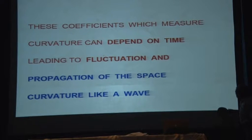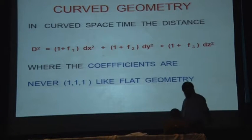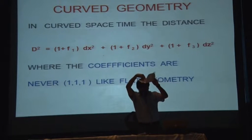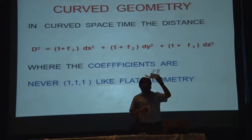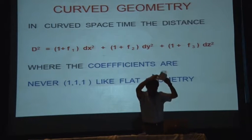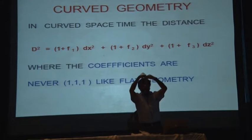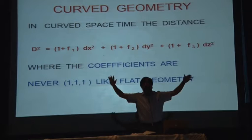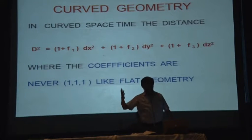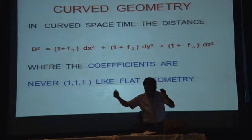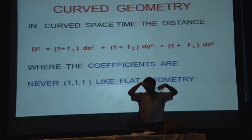These coefficients f₁, f₂, f₃ measure the curvature, and it is produced by a mass m. Now suppose this mass m starts moving. If the mass goes away, the curvature will be reduced; if the mass comes closer, the curvature will increase. So the curvature starts fluctuating. Our space becomes like the surface of an ocean because of the motion of the mass producing the curvature. Just as an oscillating electric charge changes the electric field, here the moving mass changes the space curvature.